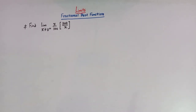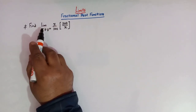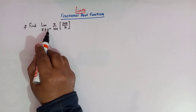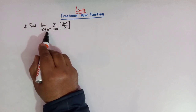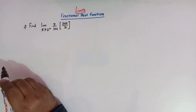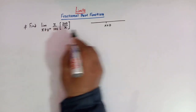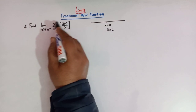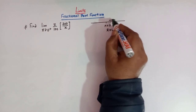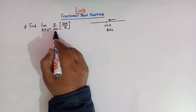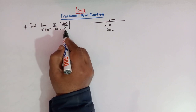Hello viewers. In today's class we are going to solve yet another important and conceptual problem from limits. Here we have to find the value of this limit: limit x tends to 0 positive. This positive sign shows that we have to find the right-hand limit of this function when x approaches 0 from the right of x equals 0. The function is x over 100 times the greatest integer of 200 over x.